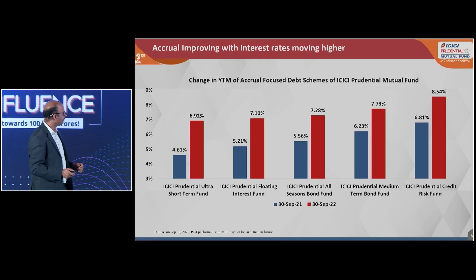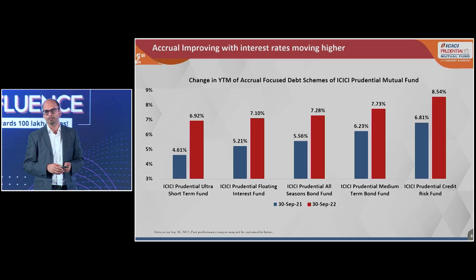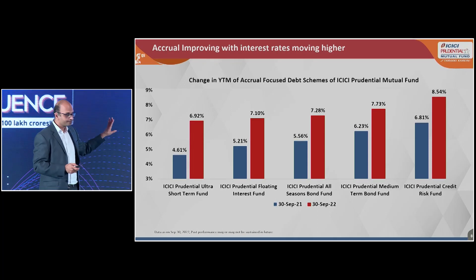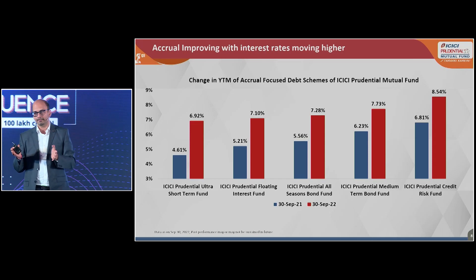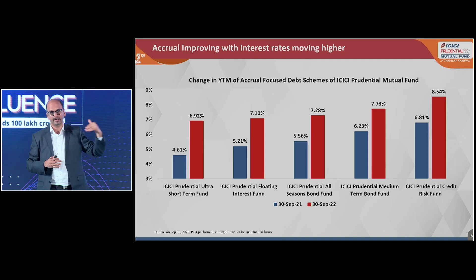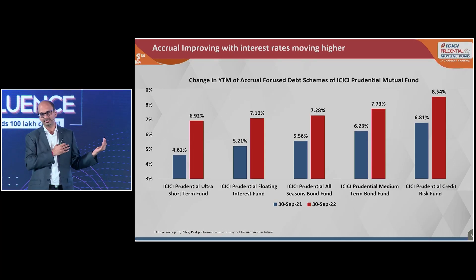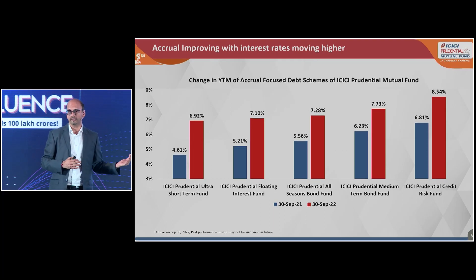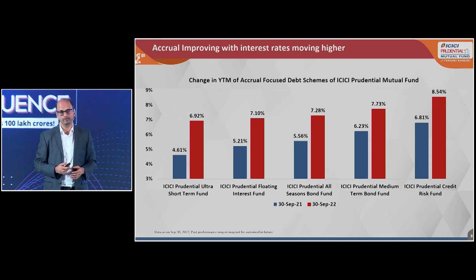In terms of different funds at ICICI Prudential, you can see how YTMs have changed. Two funds we like at this point of time: one is the All-Season Bond Fund. This fund has a long track record of eight years. The idea of the fund is that it changes its composition based on the market environment — it behaves like a duration fund at certain times and like an accrual fund at other times. So you get the best of both worlds by investing in this. If you're a long-term investor, you capture these economic cycles well — the benefit of falling interest rates and rising interest rates — all in this product. The other product we like in this part of the cycle is the Credit Risk Fund. As I said, the maximum returns for the next two years will come through accrual. So you should concentrate on the YTMs of the fund. The YTMs will keep going up as the investment cycle in the country comes back.